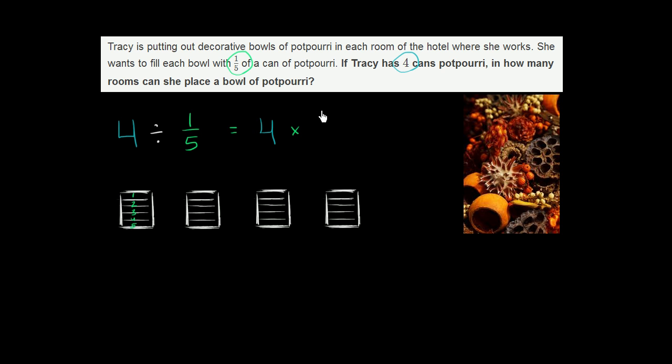So this is going to be the same thing as 4 times 5, or we can even write this as 4 times 5/1. 5 is the same thing as 5 over 1, which is the same thing as 4 times 5, which of course is equal to 20.